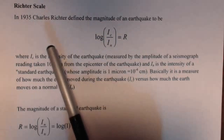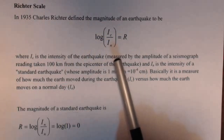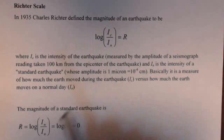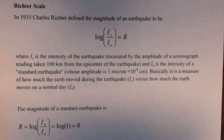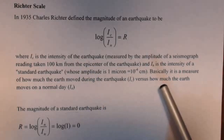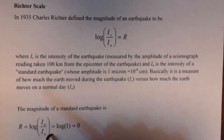So in 1935, Charles Richter defined the magnitude of an earthquake to be the log of I_c over I_n equals R. I_c is the intensity of the earthquake, which is measured with a seismograph, and I_n is the intensity of a standard earthquake, which is how much the Earth moves on any normal day.